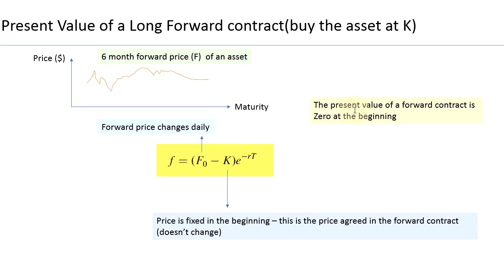Also remember: the present value of a forward contract is zero at the beginning — in other words, when you enter into the contract, the present value at that moment in time is zero. This is the formula you should use when calculating the present value of a long forward contract: (F₀ − K) × e^(−rT).